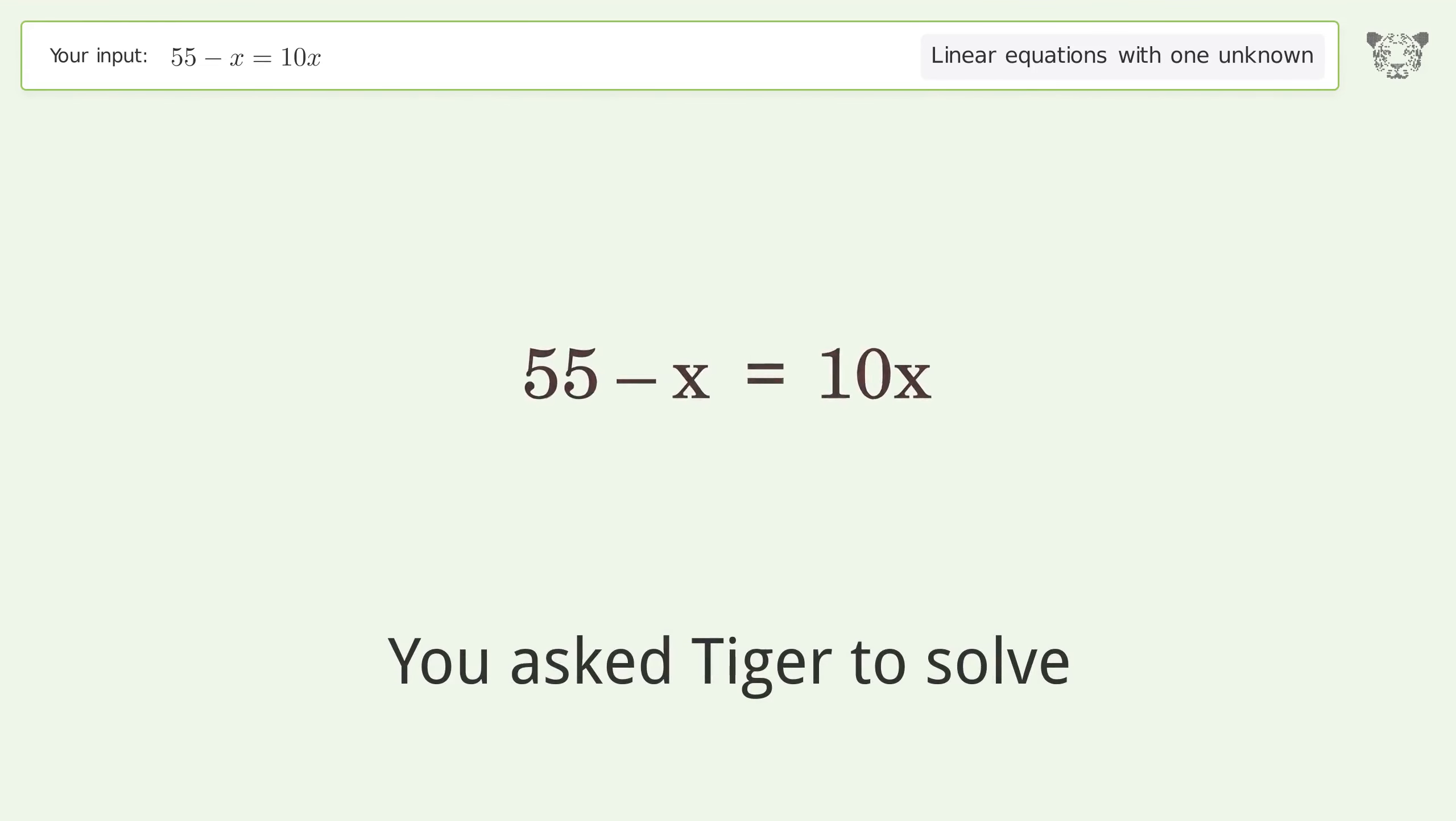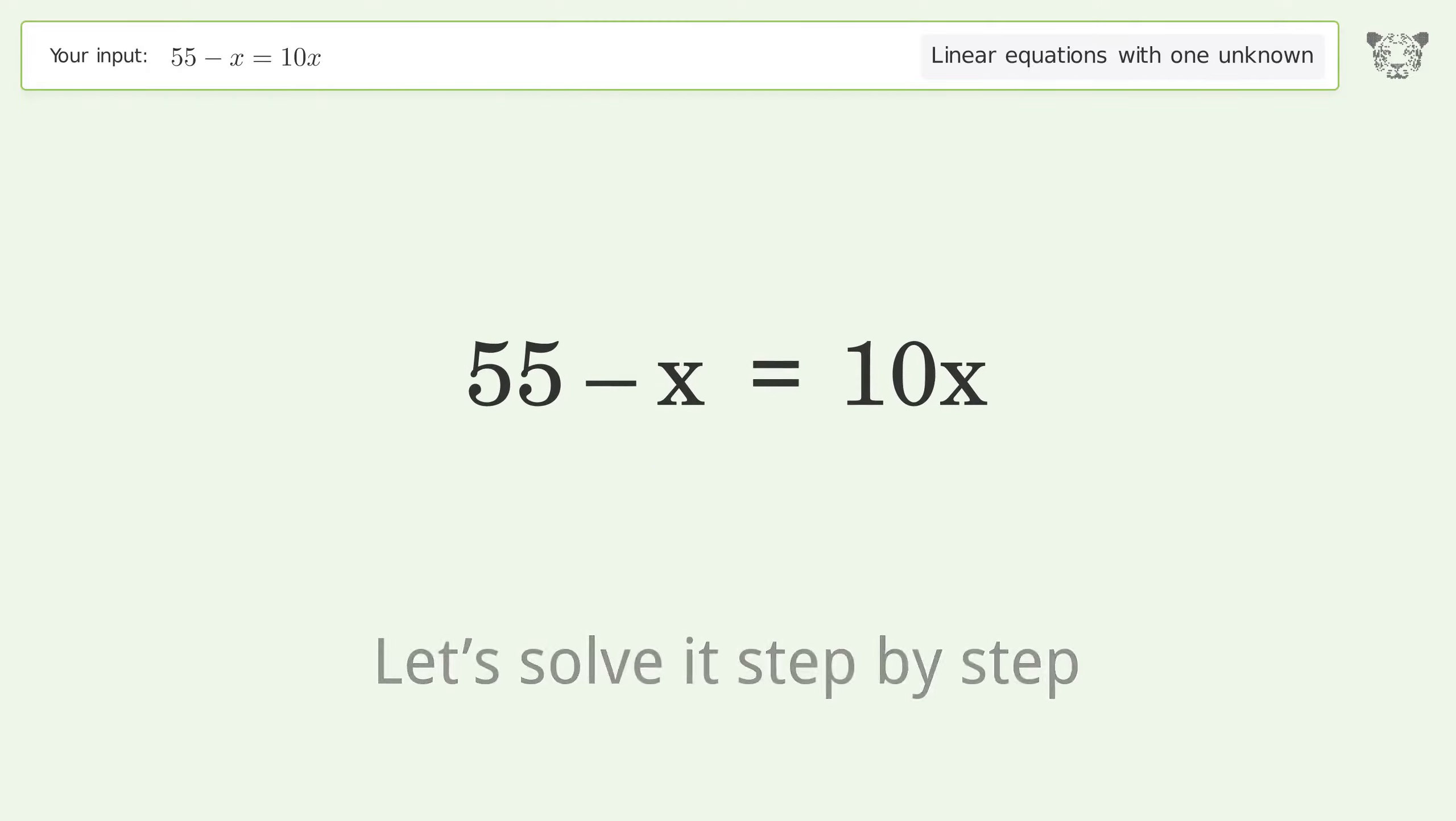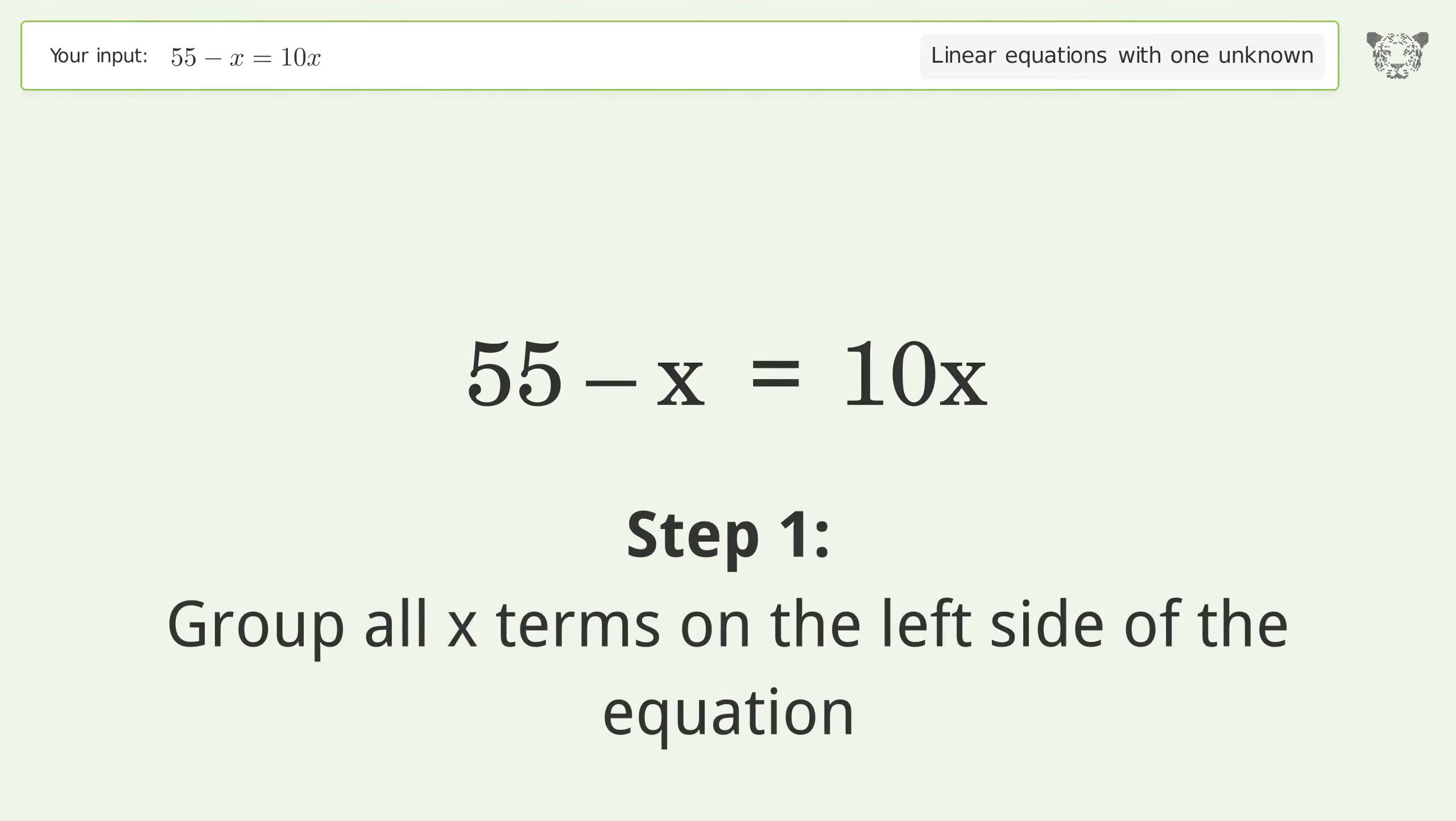You ask Tiger to solve this. This deals with linear equations with one unknown. The final result is x equals 5. Let's solve it step by step. Group all x terms on the left side of the equation.